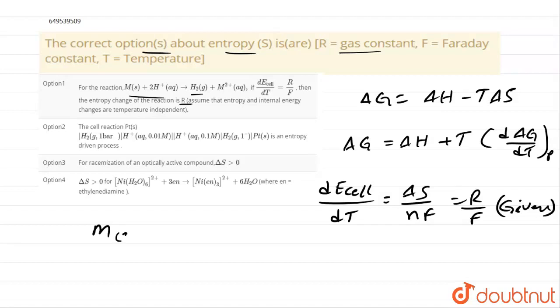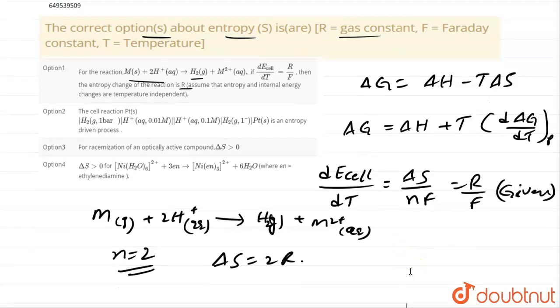Metal, gaseous metal they given and this one two H plus ions, aqueous H plus ions and H2. The hydrogen in gaseous state and M2 plus which is aqueous. Here delta S becomes 2R. Because N is equal to 2 here. N is equal to 2 is nothing but number of moles are 2. Delta change in entropy will become 2R.